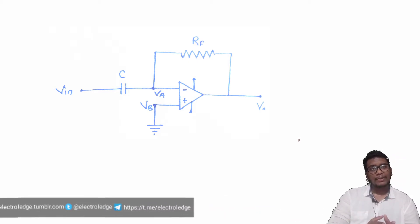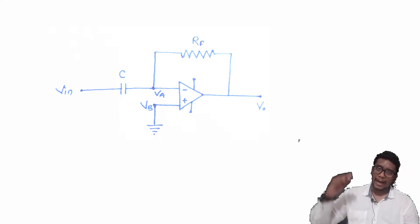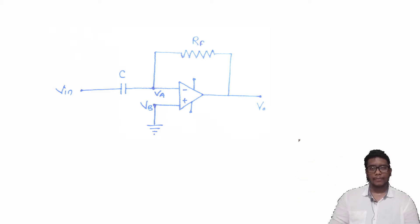This is exactly similar diagram as we used in the Integrator. But the only difference is, we connected the feedback network as a resistor in the Differentiator and as the capacitor in the Integrator.